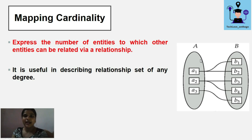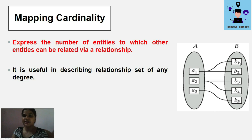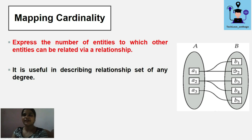Here we can see two sets: entity set A and entity set B. Entity set A has entities a1, a2, and a3. Entity set B has entities b1, b2, b3, b4, and b5. Entity a1 is connected with b1 and b2, a2 is connected with b3 and b4, and a3 is connected with b5. Mapping cardinality describes how entities in one entity set are connected with entities in another.